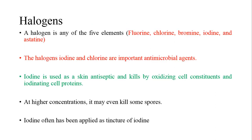The next important category is halogens. A halogen is any of five elements found on the periodic table: fluorine, chlorine, bromine, iodine, and astatine.